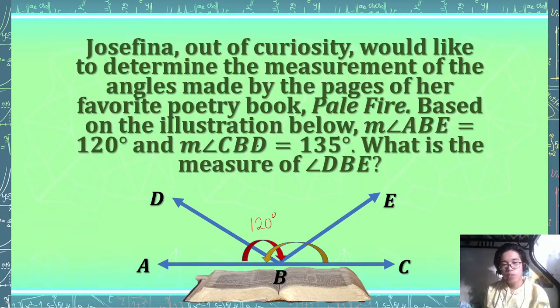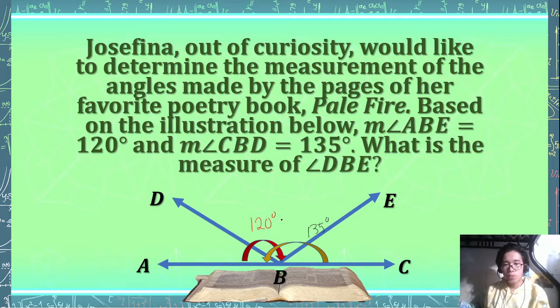The measurement of angle CBD is equal to 135 degrees. The question is: what is the measurement of angle DBE? This is the angle that we want to find.